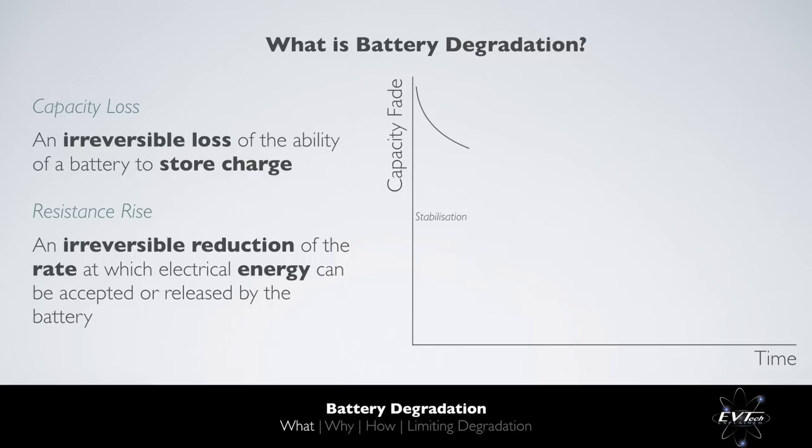The first is stabilisation. Initially, capacity fades quickly, but the rate of capacity fade rapidly decays as the solid-electrolyte interphase, which we'll explain later, stabilises and the anode becomes less reactive with the electrolyte.